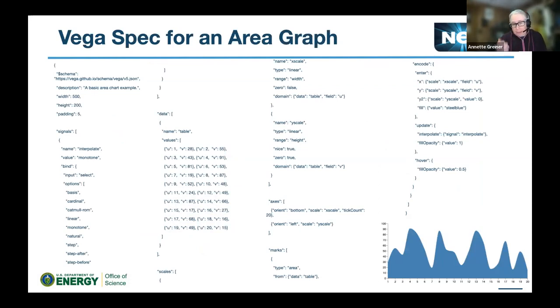So Vega, this is an example of a Vega spec. So this is JSON. This is looking at a more or less simple area graph that you might try to render with it. And there's just a lot here, right? I mean, I had to make this tiny. I don't expect anybody to necessarily even read this.